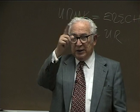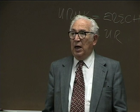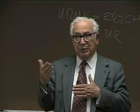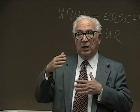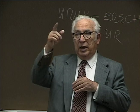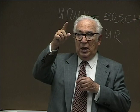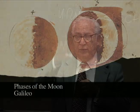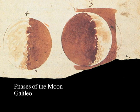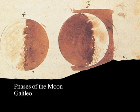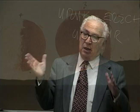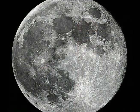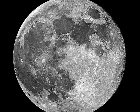Thin crescent right after sunset. And then every subsequent evening, it gets bigger and bigger. And then it appears as a half disk, which is the end of the first quarter. And then on the 14th night of the cycle, it's a full moon.